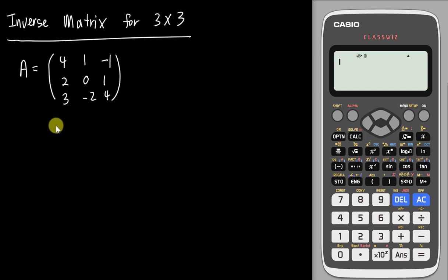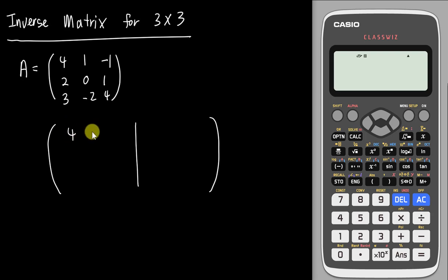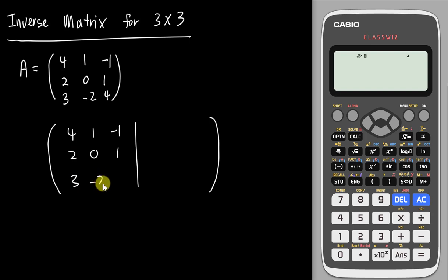What I will do is combine two matrices into one. Here I will just copy my matrix A: 4, 1, negative 1, 2, 0, 1, 3, negative 2, 4.